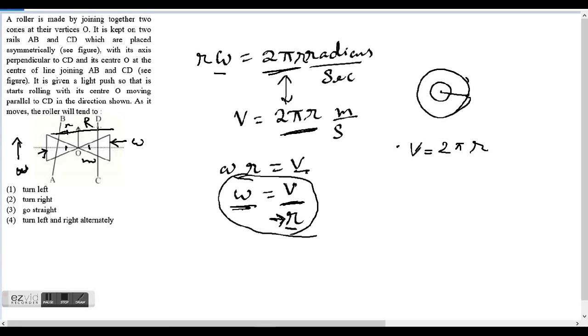Right. So this is a straight line CD, and AB is slightly bent, not straight.